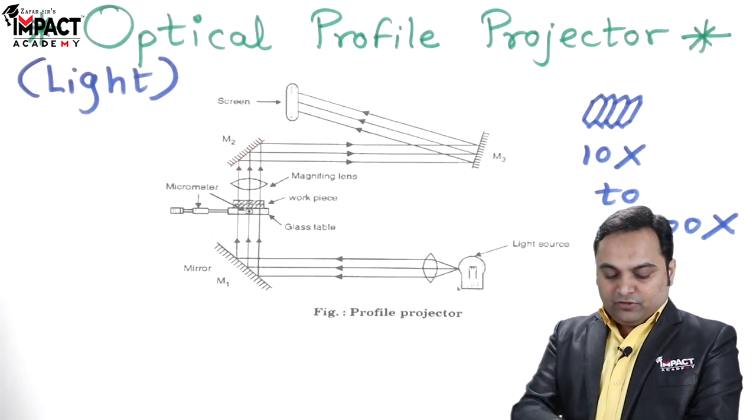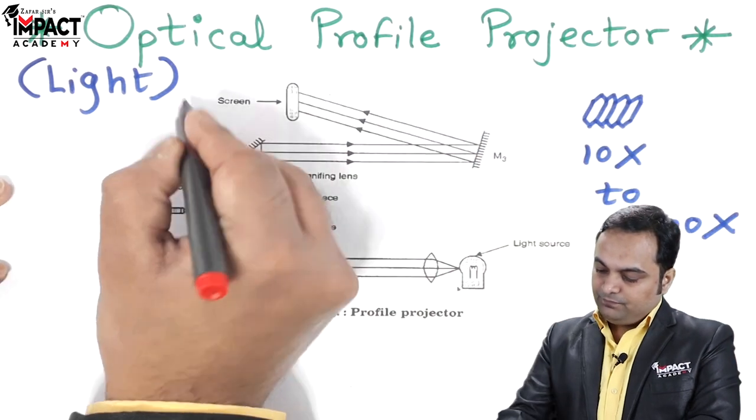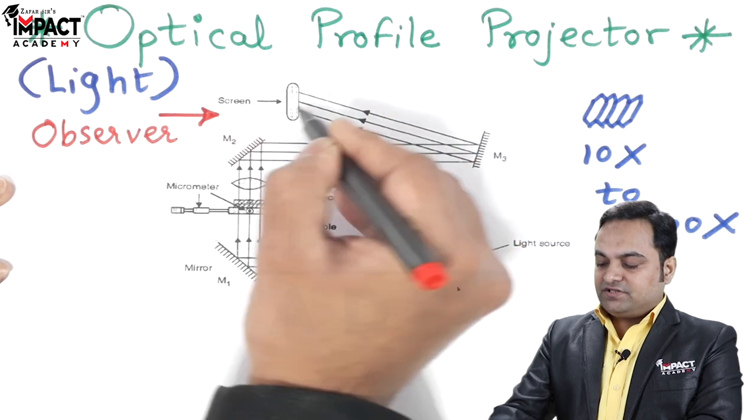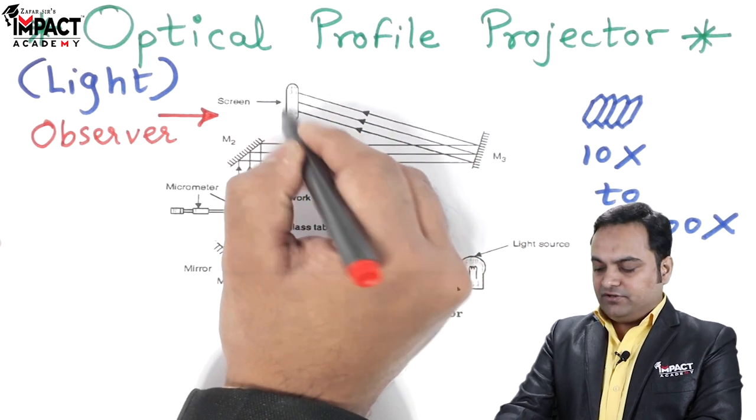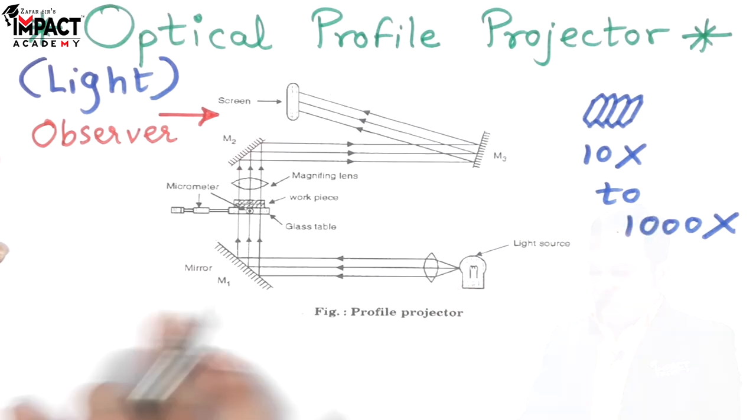We have the screen, so the observer would be in front of this screen. The screen is mostly dark green in color.